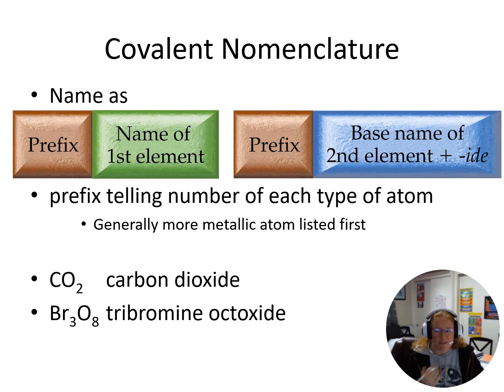Typically speaking, we put the more metallic atom first, and that prefix is just going to tell us how many of that atom exist. The one exception to this is our first element - if there is only one of our first element, it doesn't get a prefix at all.